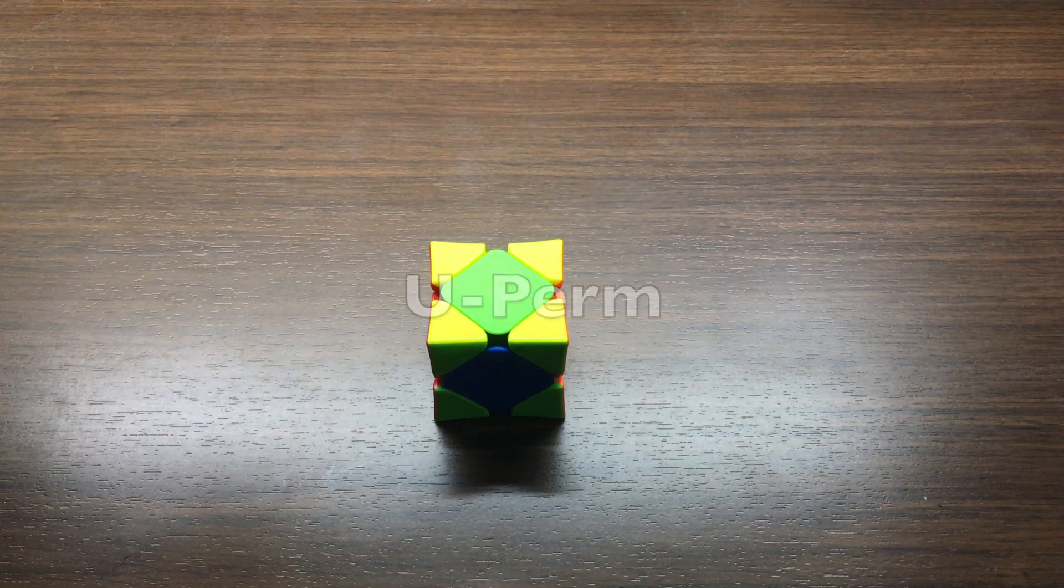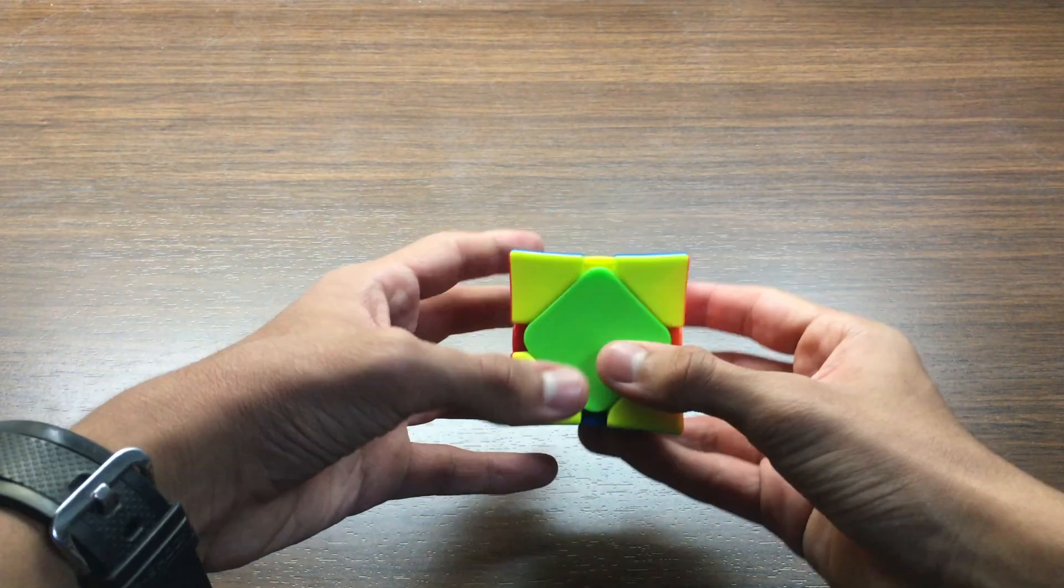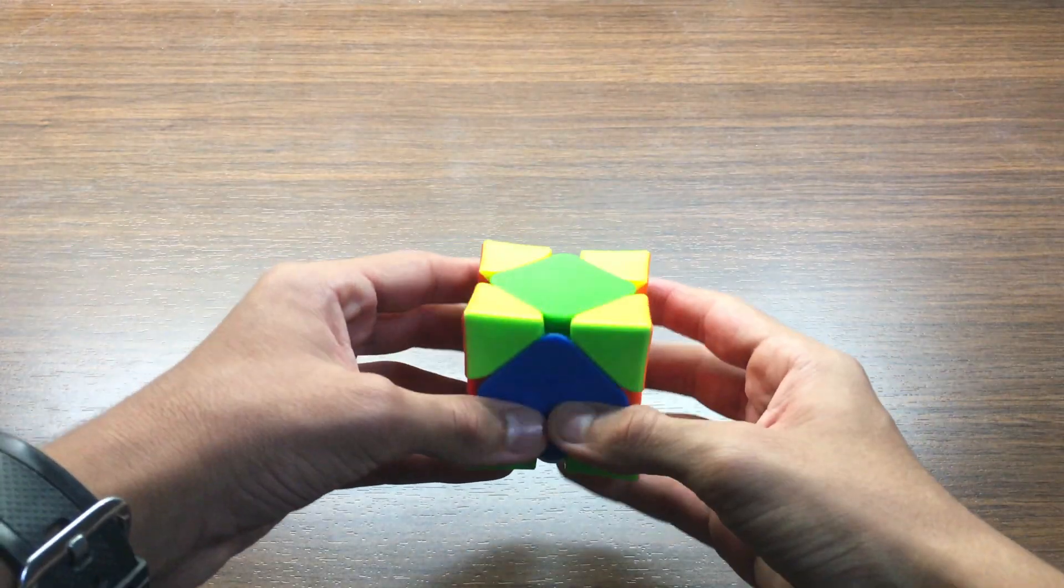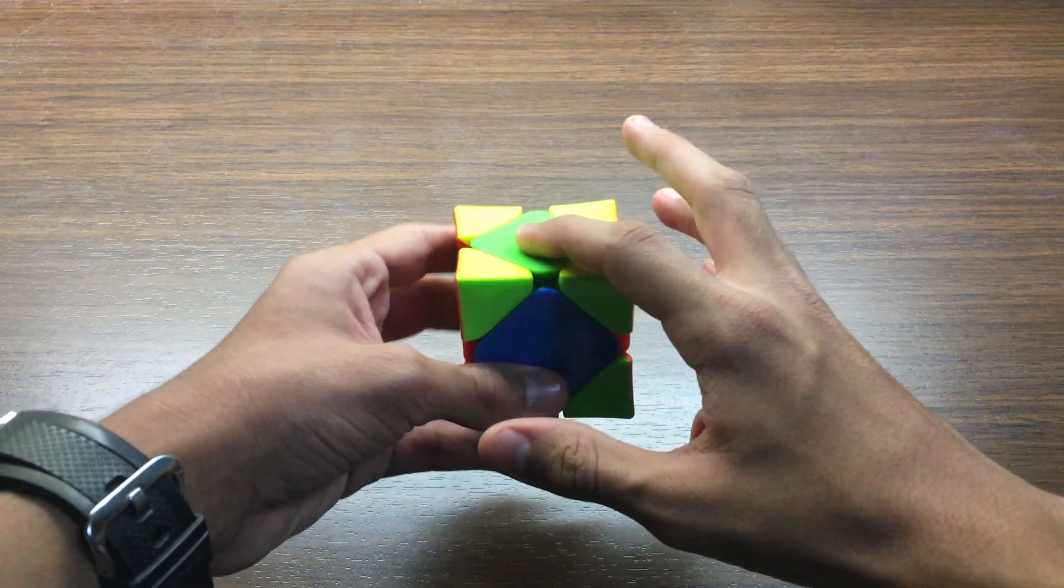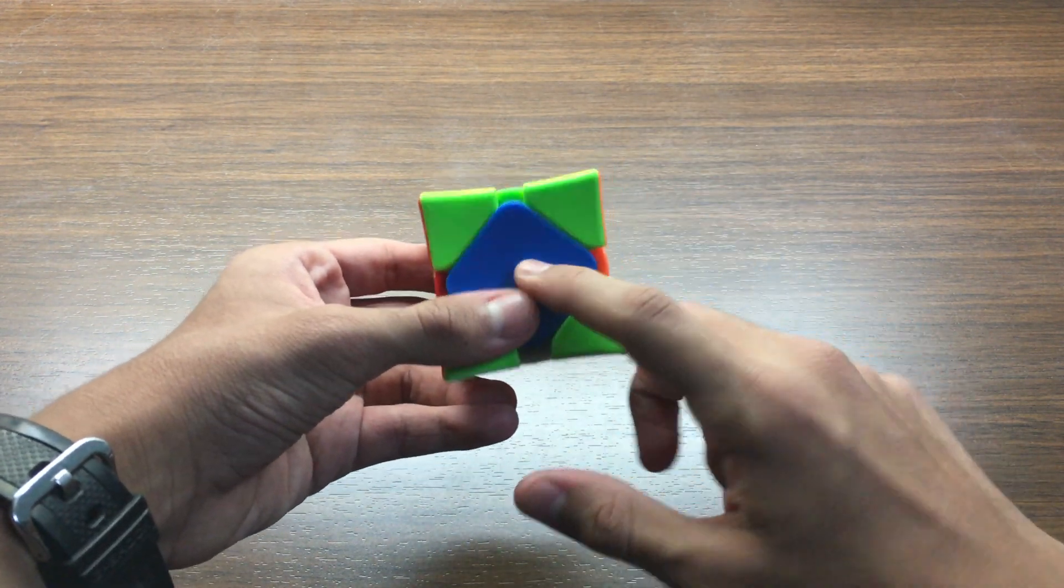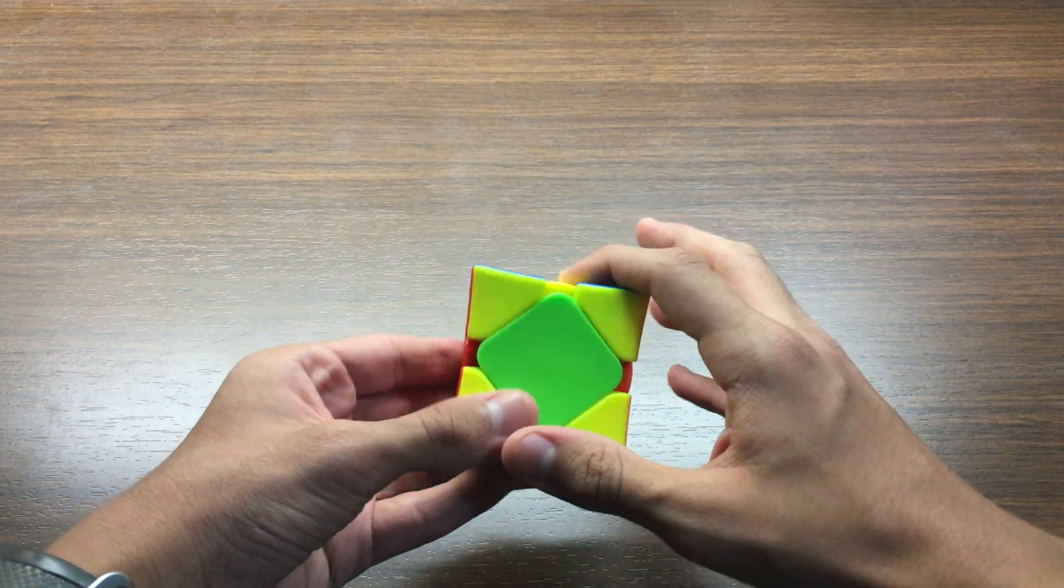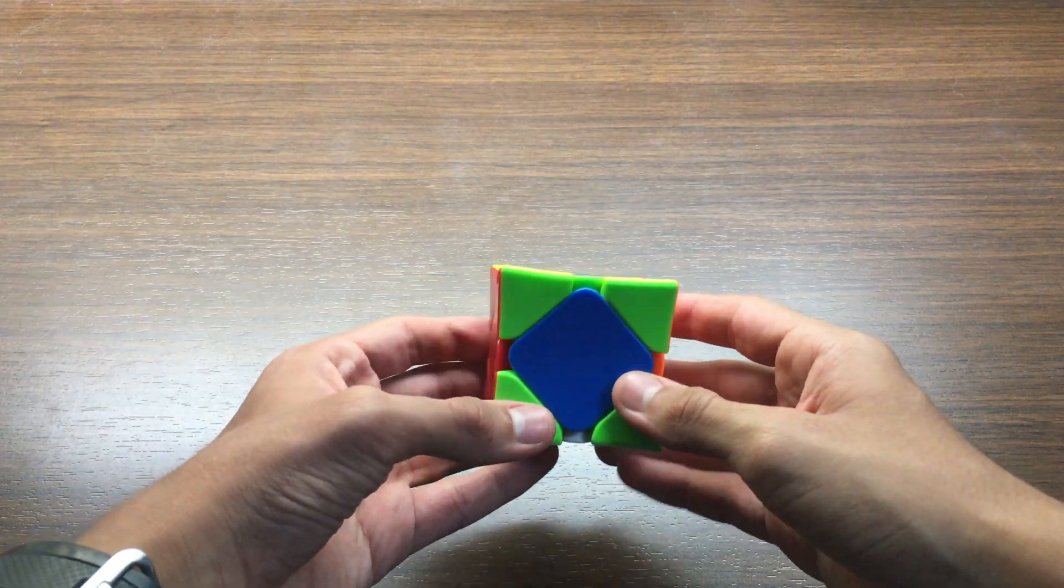So the first case, like I said, is the U perm. It occurs when you have three centers unsolved. Basically, for this case, you need to move the top center over here, this center to the opposite side, and this center up. So the algorithm goes like this.